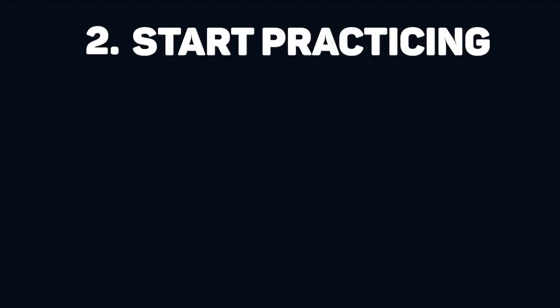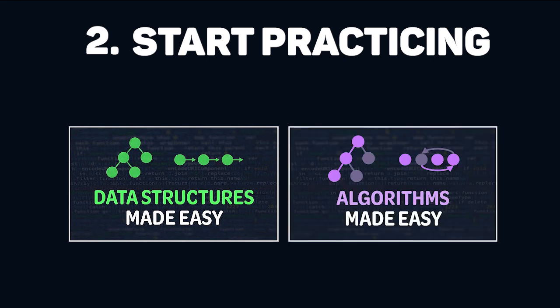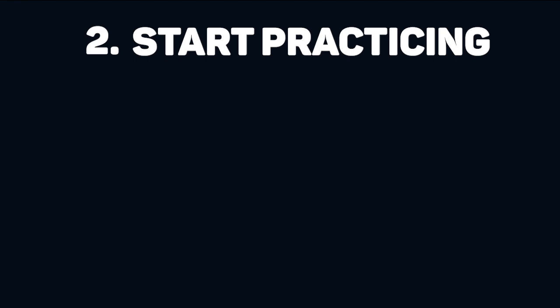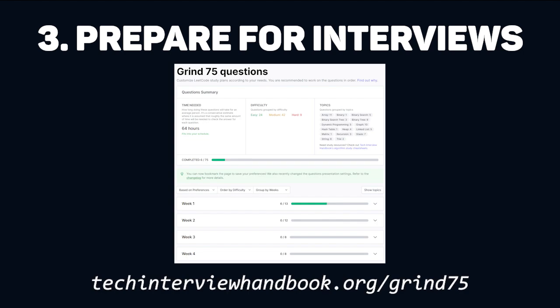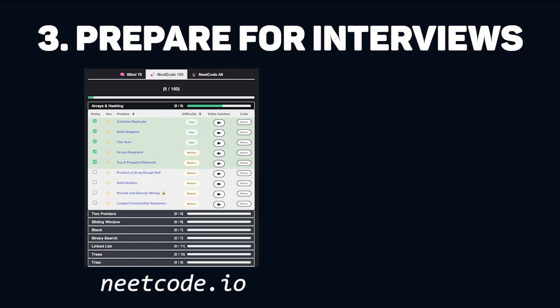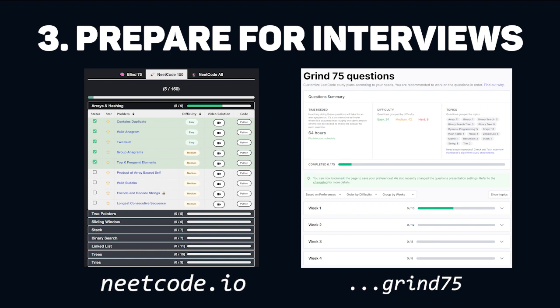Next, you'll want to get right into practicing. If you want to understand the data structures and algorithms a bit better, I have two videos that cover them, but the best way to learn is to actually start solving questions. I strongly recommend following this list of 150 questions by NeetCode for your first time learning. There are about 6-12 questions for each topic, and videos explaining how to solve each question if you get stuck. Once you've gone through that list, you'll want to use Grind75 to keep your skills sharp before interviews. Whereas NeetCode has you do the same topic over and over again, which is better for beginners, Grind75 varies the topics — this is called spaced repetition and is better for continued learning.